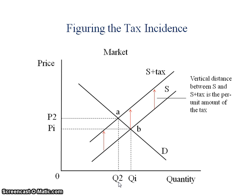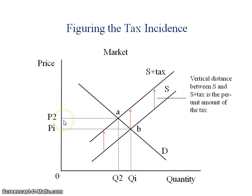Note that market quantity has fallen from Q initial to Q2. The vertical distance representing the per unit amount of the tax is greater than the vertical distance associated with the change in the market price from P initial to P2. So what this means is that consumers have paid some of that per unit tax, but it is also the producers that have paid another portion of it — underscoring the idea that for any excise tax or per unit tax, the burden of the tax is going to be shared among producers and consumers.